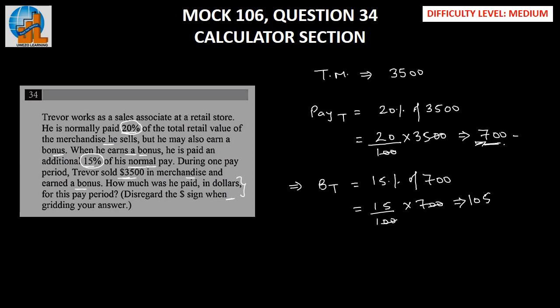Now all we need to do is add these two numbers up to find the total money earned by Trevor. The total for Trevor should equal total pay plus bonus, and that should be equal to $805. Hence, $805 is the right answer.